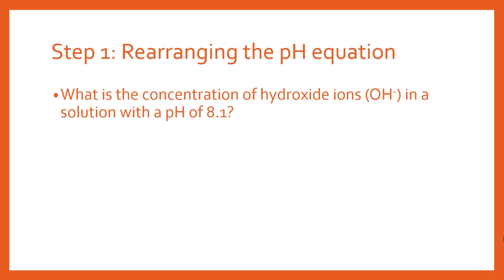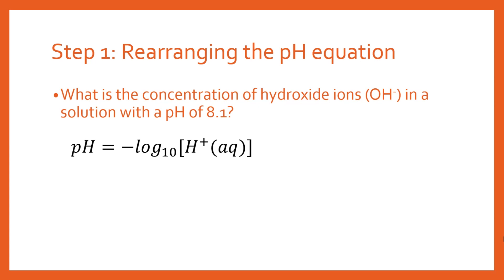The first step in solving this problem is going to be rearranging the pH equation. pH is simply given by minus the log to the base 10 of the hydrogen ion concentration. The square brackets simply mean concentration. We need to find the hydrogen ion concentration before we can find the hydroxide ion concentration, so we're going to use one to find the other.